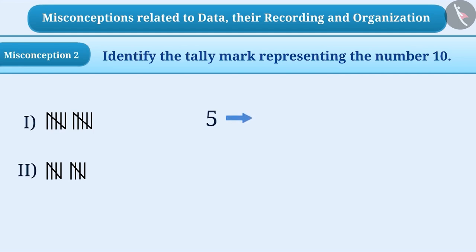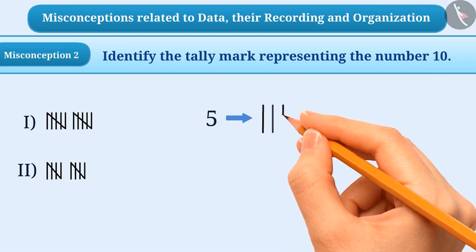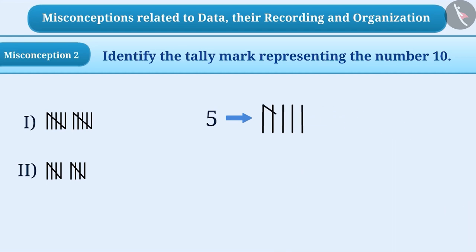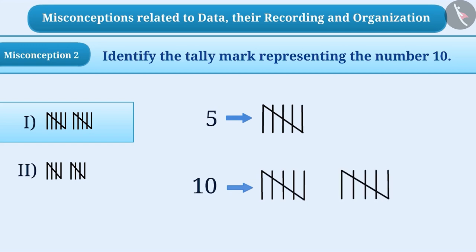A slanting line is drawn on four straight lines to represent the number 5 in the tally mark. But some children may not get the right way to express tally marks. They draw a slanting line on five straight lines to represent the number 5. In this way, they understand that in option 1, slanting line has been drawn on two groups of five to represent the number 10. So, they choose the first option, which is the wrong answer.